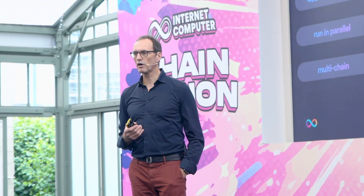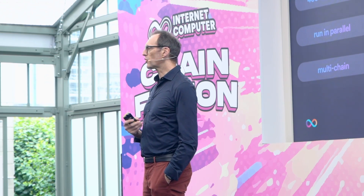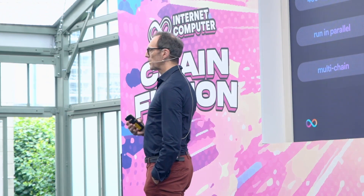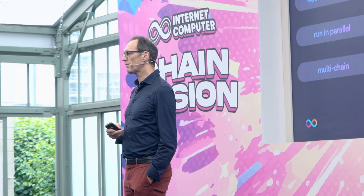ICP smart contracts are a different breed — blockchain on steroids. You can have much more storage. Rethink what a smart contract is when it comes to ICP — it's very different. 400 gigabytes of data storage in a smart contract right now, and that limitation can easily be pushed further. More memory — 4 gigabytes of memory, not just 4K. WebAssembly, so you can program in many languages that compile to WebAssembly.